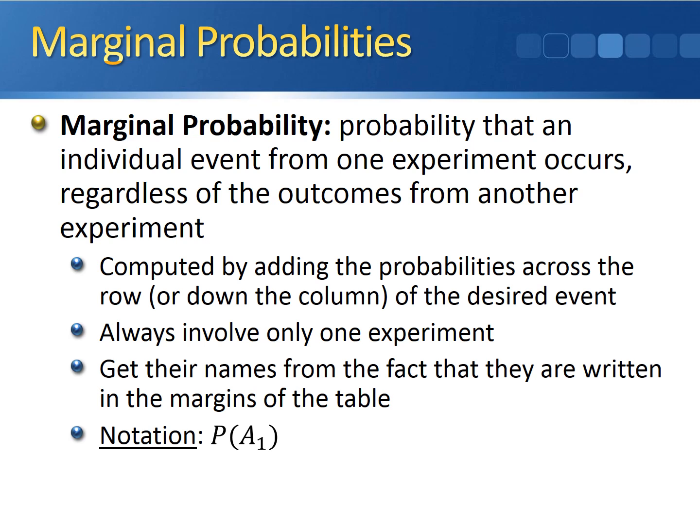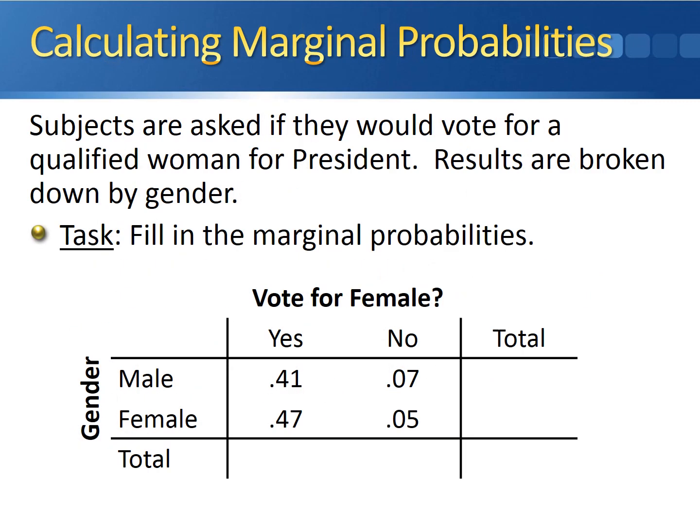The notation for a marginal probability is just the probability of the desired event inside parentheses. Here's an example: we take a survey asking subjects if they would vote for a qualified woman for president, and break results down by gender — gender along the rows, vote yes or no along the columns. The sum of all joint probabilities in a table of probabilities must equal 1, so the bottom-right margin value is 1.